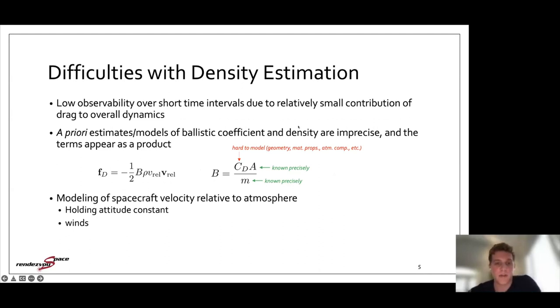So density estimation is pretty difficult. It has low observability over short time intervals due to the relatively small contribution of drag to the overall dynamics. While it is a significant perturbation in LEO, the dominant dynamics are still driven by gravity. And initial estimates and models of ballistic coefficients and density are imprecise, and the terms appear as a product. So you have the ballistic coefficient B and the atmospheric density rho contributing to the drag perturbation, and both B and rho are relatively imprecise. For the ballistic coefficient, we'll know the area of the spacecraft, or the cross-sectional area relative to the flow pretty precisely from attitude determination, and we'll also know its mass, but the drag coefficient is really hard to model.